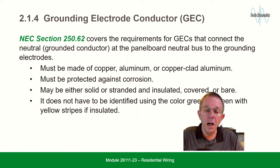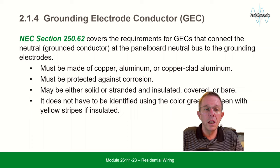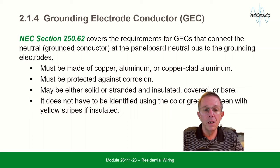The GEC must be made of copper, aluminum, or copper-clad aluminum. It must be protected against corrosion, and it may be either solid or stranded, and insulated, covered, or bare. It does not have to be identified using the color green or green with a yellow stripe if insulated.